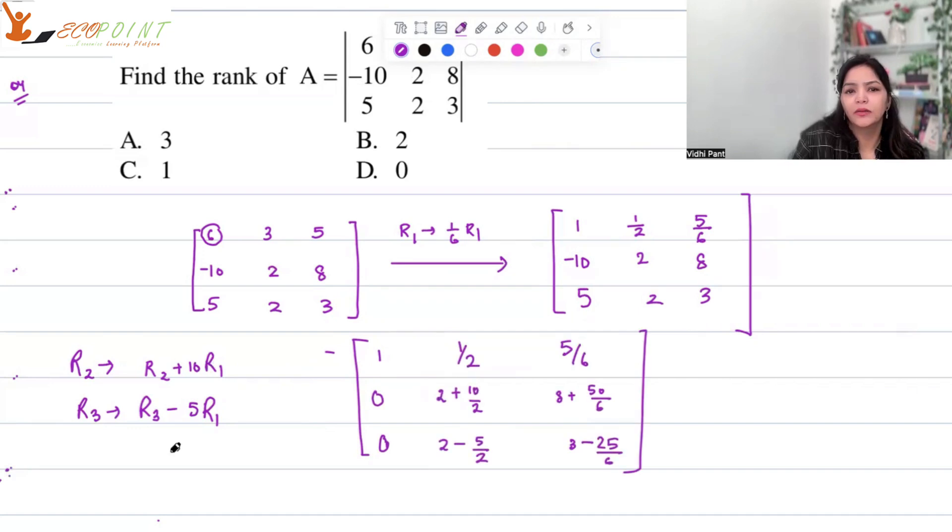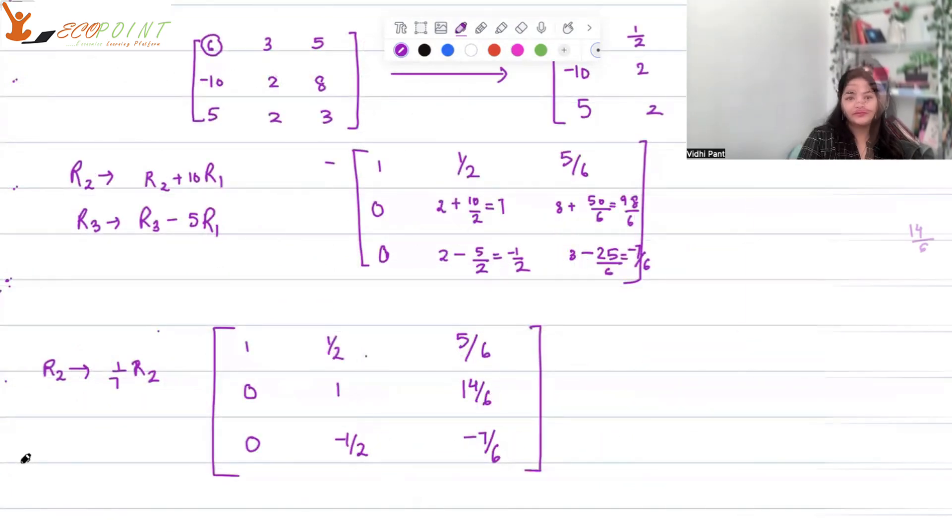Now with the operations R2 goes to R2 plus 10 times R1 and R3 goes to R3 minus 5 times R1, I'm going to get 1, half, 5 by 6, 0, 0 here, and 2 plus 10 by 2 that is 7, and 8 plus 50 by 6 that is 98 by 6. Here you will have 2 minus 5 by 2 so it's going to be minus 1 by 2, and 3 minus 25 by 6 that is minus 7 by 6.